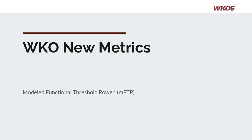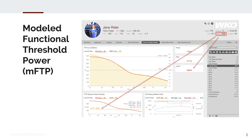Welcome to this Power Duration two-minute tutorial on Modeled Functional Threshold Power, or MFTP. MFTP can be found in the hero bar of any selected athlete — on the right-hand side with the other Power Duration metrics. It can be used in both charts and reports within dashboards of WKO5.